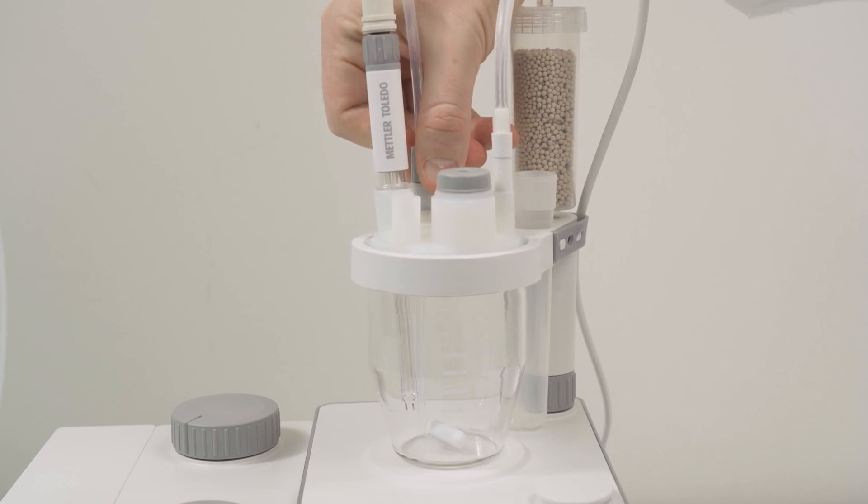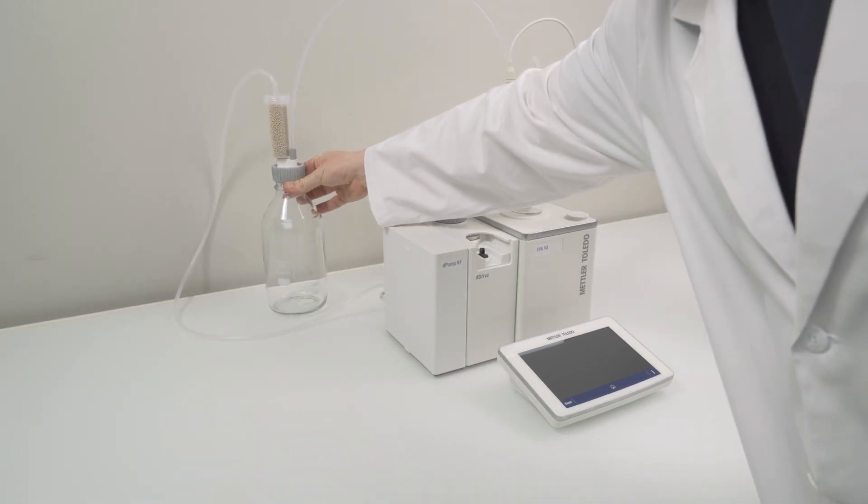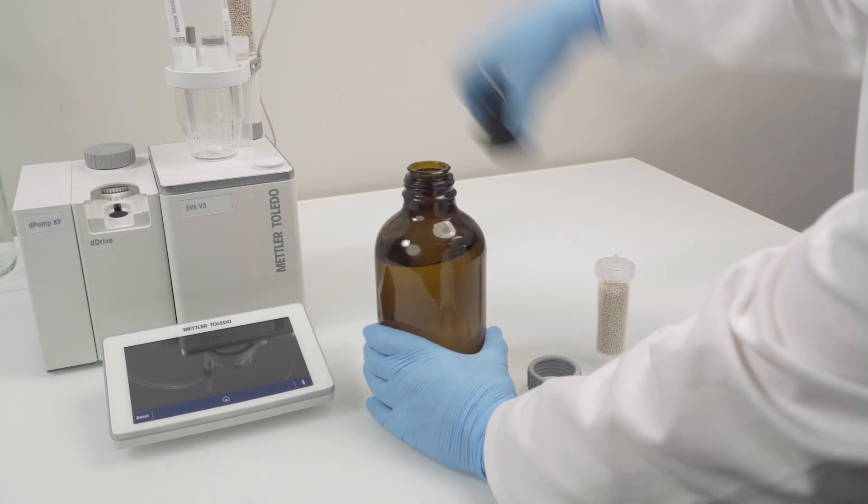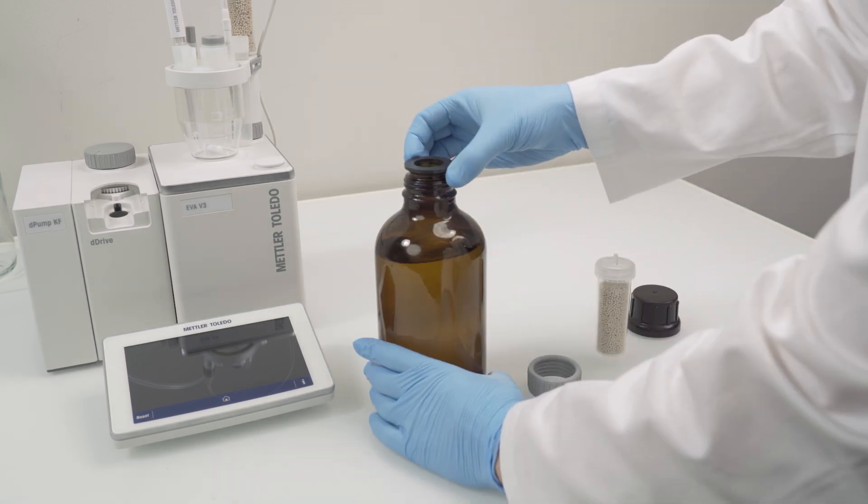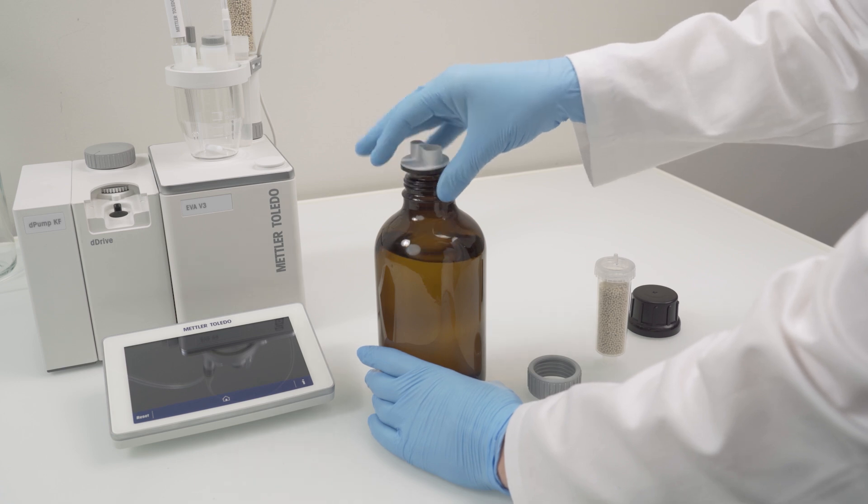Before we continue with the assembly of the solvent bottle, we need to make some space. Move the waste bottle to the back side of the instrument. The solvent bottle is assembled similarly to the waste bottle. However, from now on we are working with chemicals, so make sure that you additionally wear safety goggles and gloves.